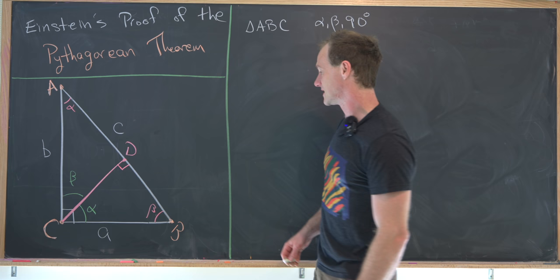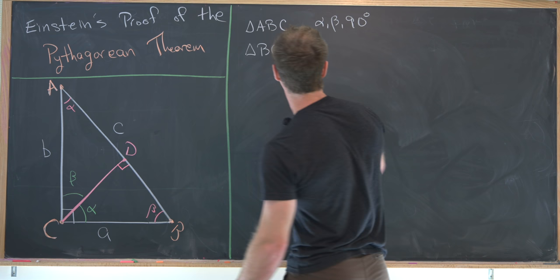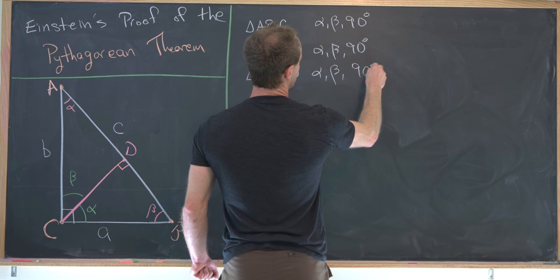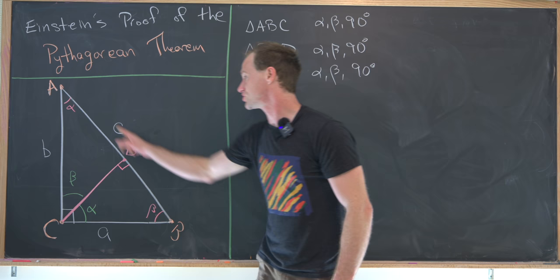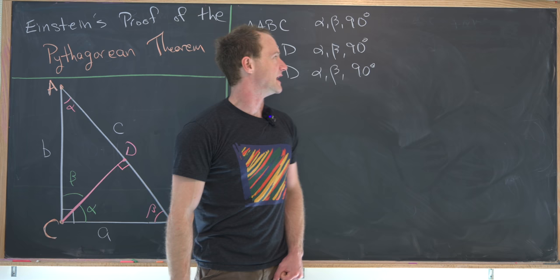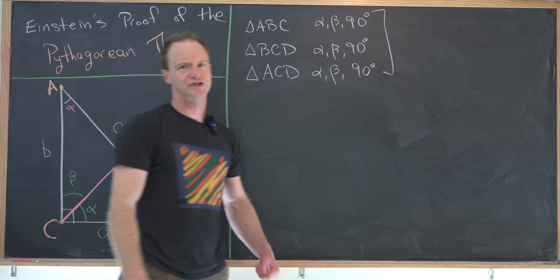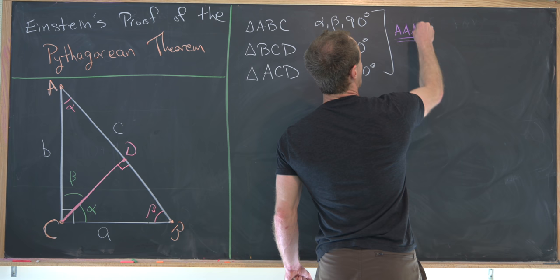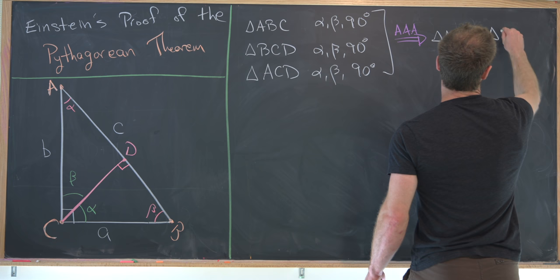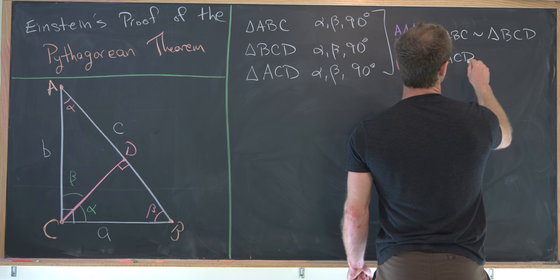Via a very similar argument, the remaining angle in triangle ACD is beta. So triangle BCD has angles alpha, beta, 90 degrees, and triangle ACD also has angle measures alpha, beta, 90 degrees. That's the largest triangle, the small sub-triangle, and the larger sub-triangle — all with angle measures alpha, beta, 90 degrees. By the Angle-Angle-Angle theorem, each of these triangles is similar: triangle ABC is similar to triangle BCD, which is similar to triangle ACD.